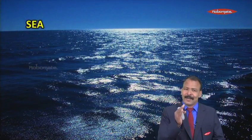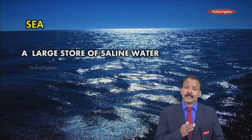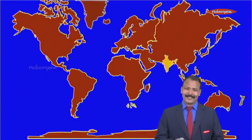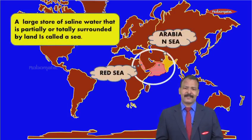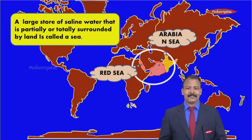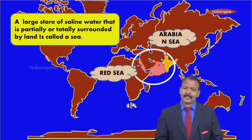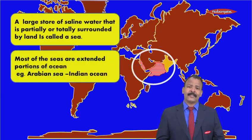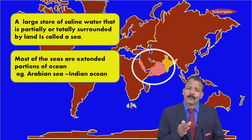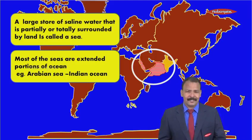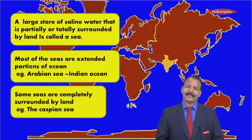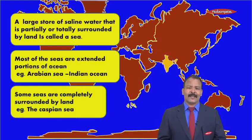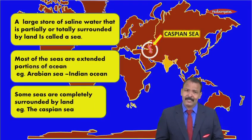The next water body, comparatively smaller, is a sea. A sea is a large store of saline water. For example, near India we have the Red Sea and the Arabian Sea, which is much closer to India. A sea is a large store of saline water that is partially or totally surrounded by land. Most seas are extended portions of the ocean — for instance, the Arabian Sea is an extension of the Indian Ocean into the land. Some seas, like the Caspian Sea, are completely surrounded by land from almost all sides.